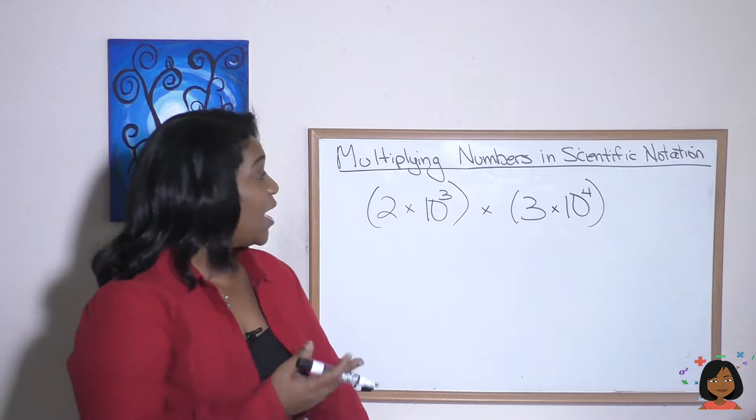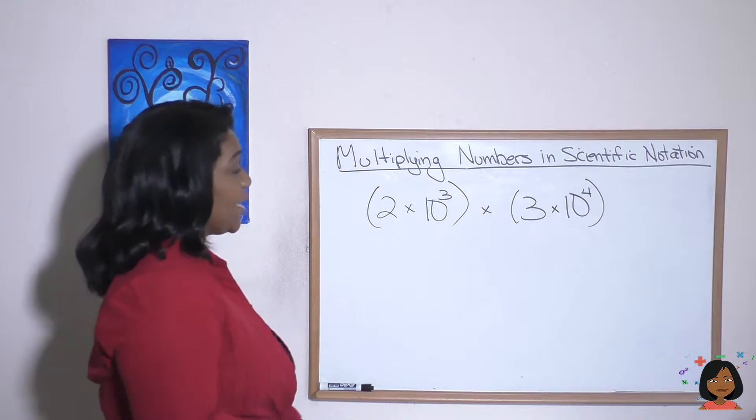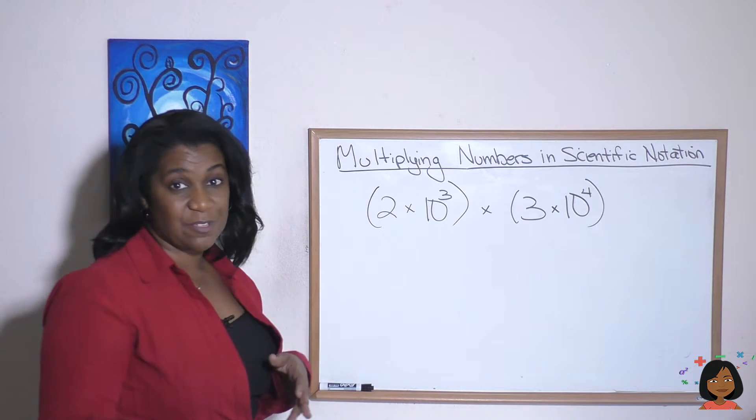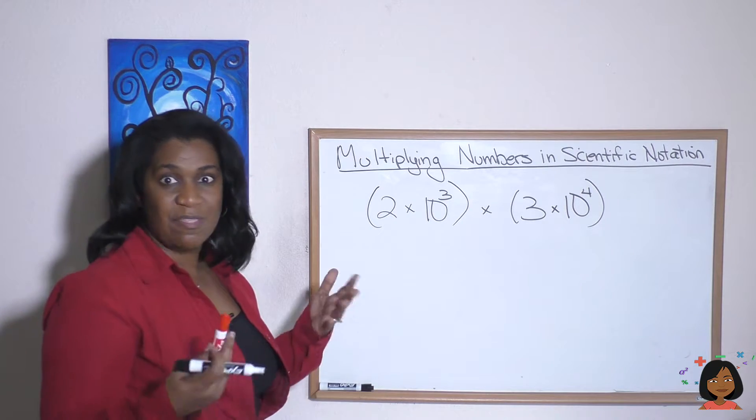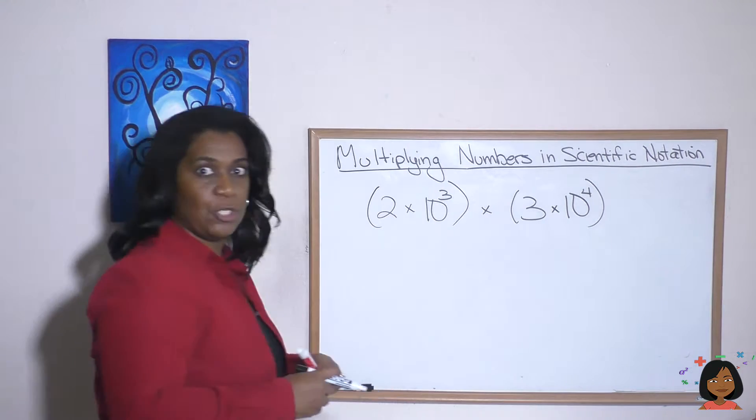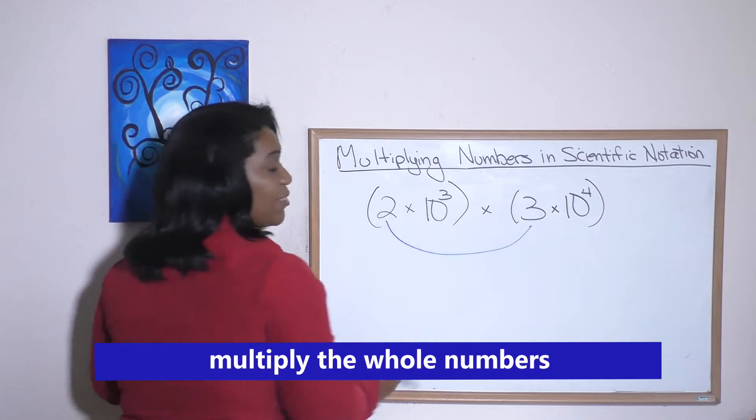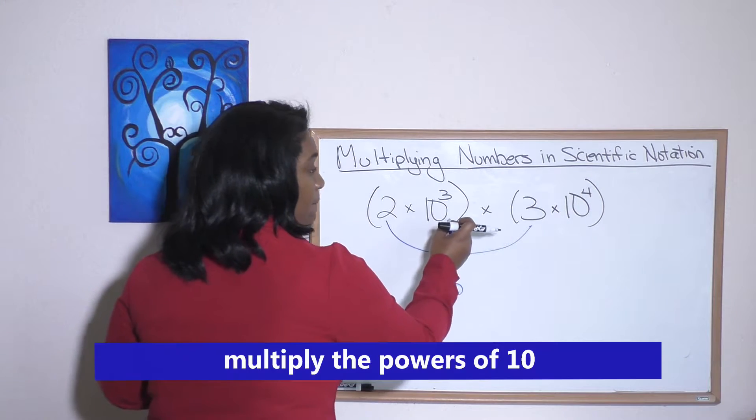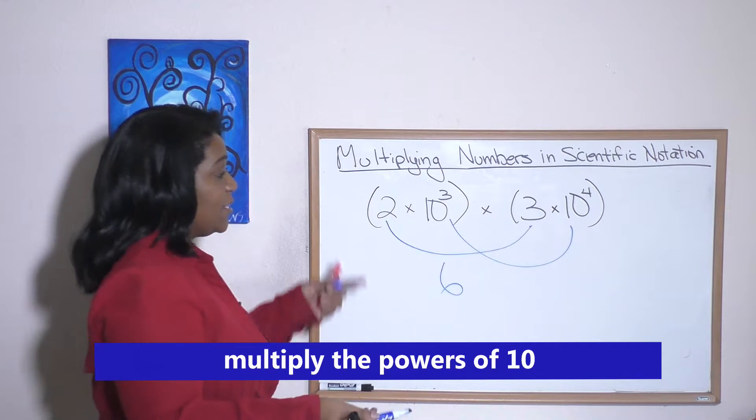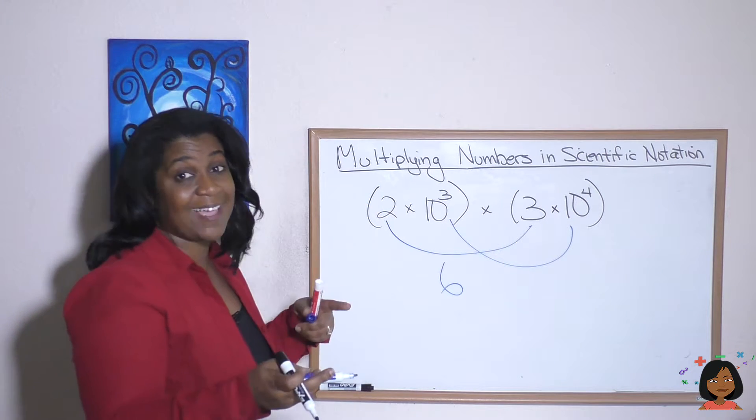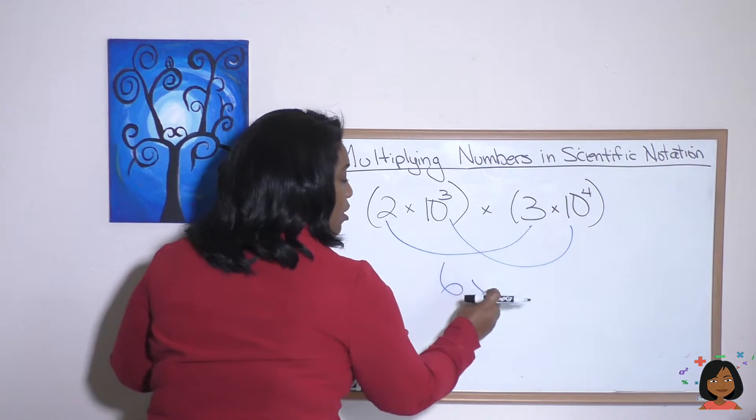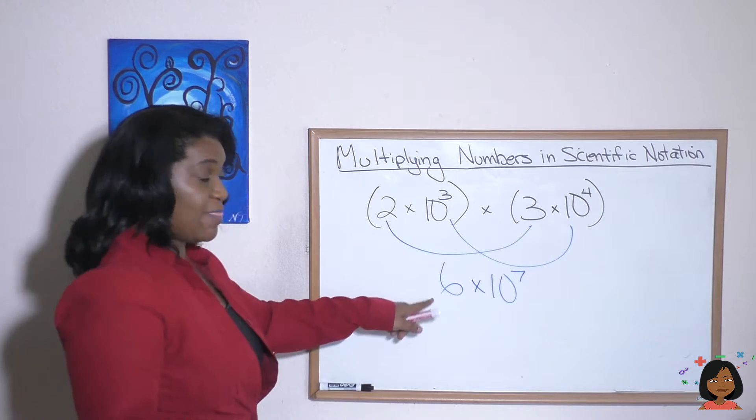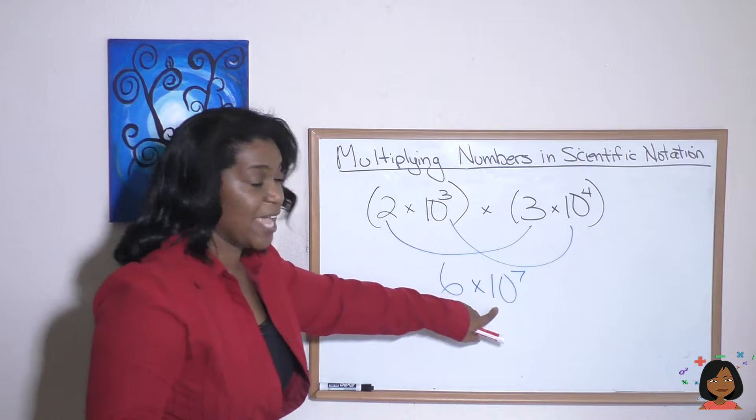Let's move on to multiplying numbers in scientific notation. So here we have two numbers using scientific notation, 2 times 10 to the third and 3 times 10 to the fourth. So when multiplying these numbers, there's a certain process that we follow. First thing is we multiply the whole numbers. 3 times 2 is 6. And then we multiply the powers of 10. 10 to the third times 10 to the fourth. We just learned that we add the exponents when we're multiplying powers of 10. So we're going to put 10 to the seventh because 3 plus 4 is 7. And that is your answer. It's just that simple. 6 times 10 to the seventh.